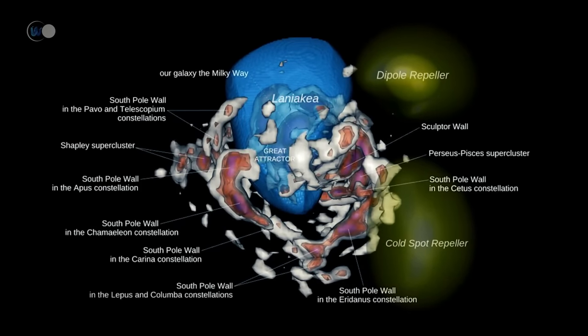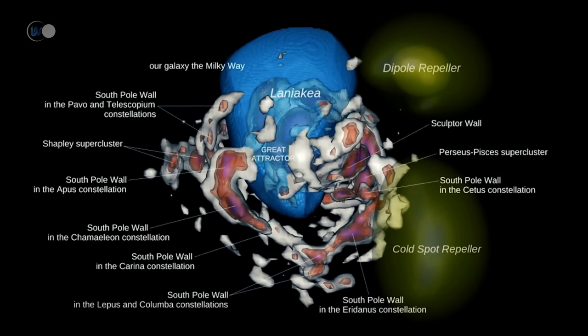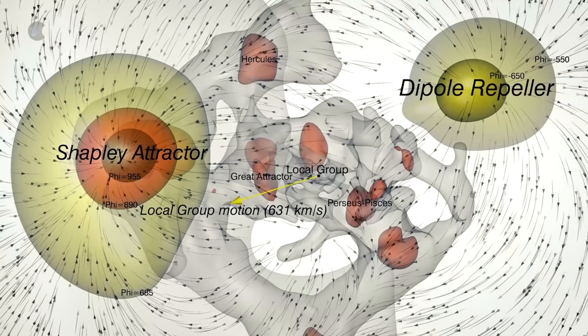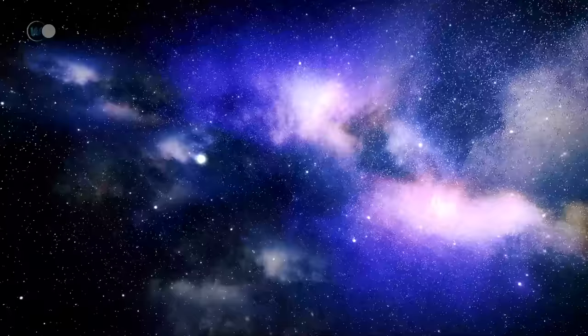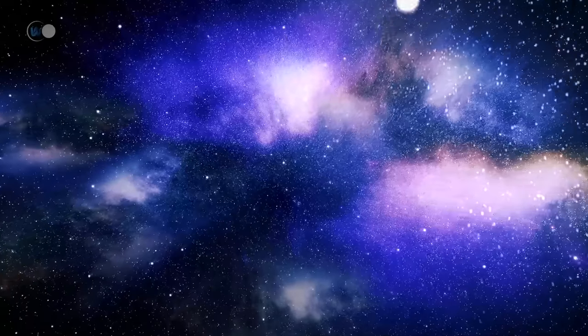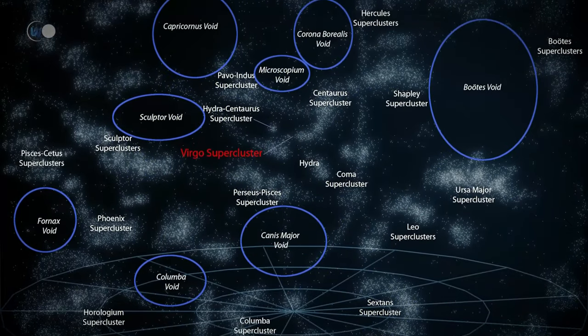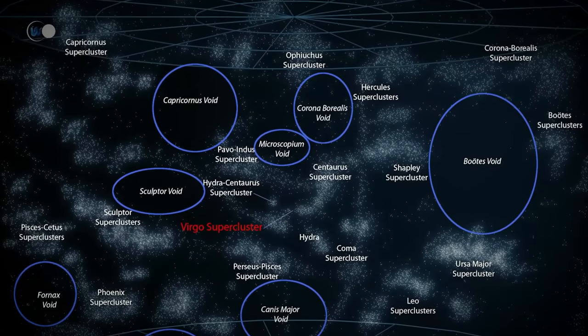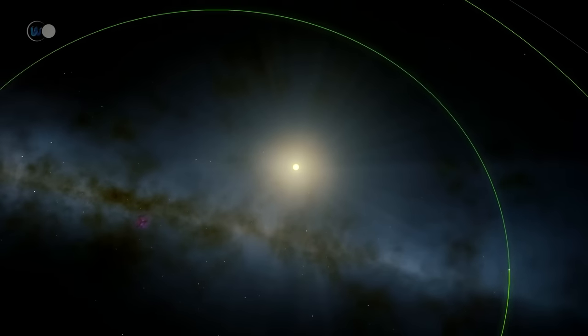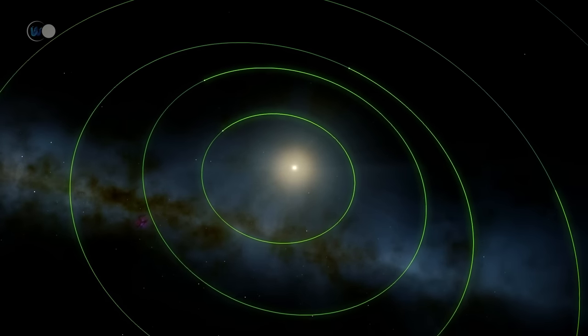At the heart of the Laniakea supercluster is the Great Attractor. This gravitational anomaly in intergalactic space demonstrates the existence of a local concentration of mass equivalent to tens of thousands of times the mass of the Milky Way. Our galaxy, and all those in our supercluster, are heading towards the Great Attractor. If one imagines a picture from the sky that represents the distribution of all the superclusters in the observable universe, the Milky Way is much too small to be visualized. Proportionally, the solar system, the Earth and man can only be imagined. We are a tiny part of a speck of dust in this vast ocean.